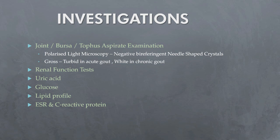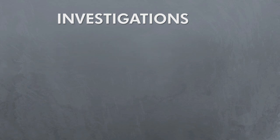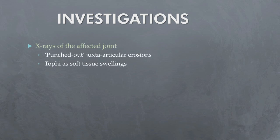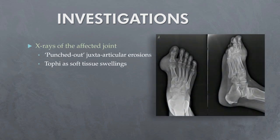Tophaceous gout may be accompanied by a modest but chronic elevation in ESR and CRP. X-rays are usually normal in acute gout except for soft tissue swelling. However, in chronic tophaceous gout, well-demarcated punched-out erosions in juxta-articular bone may be seen. There is no sclerotic reaction and joint spaces are preserved until late. Tophaceous deposits may also be visible on X-rays as soft tissue swelling.